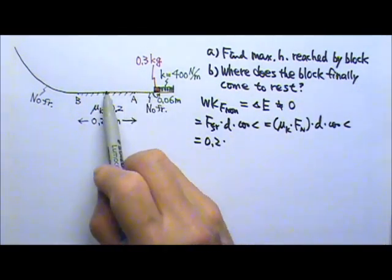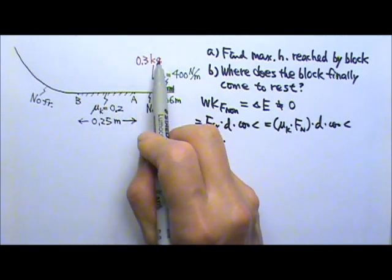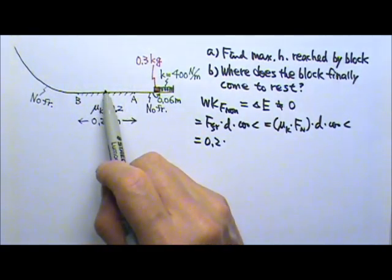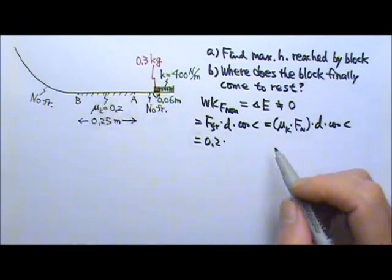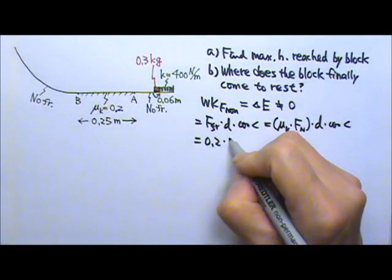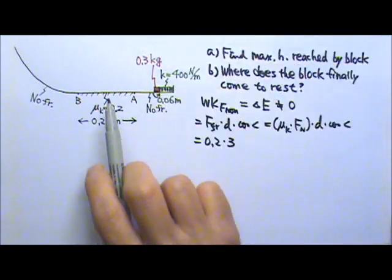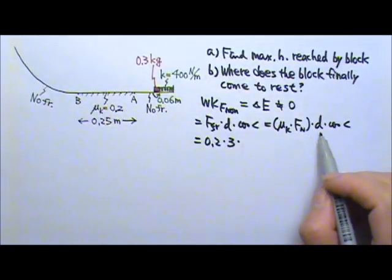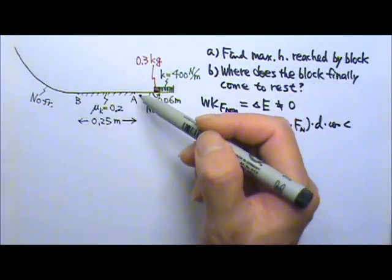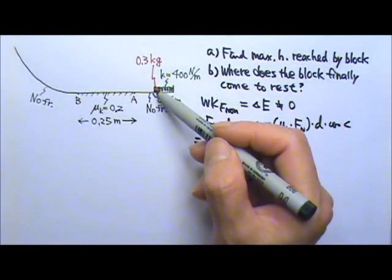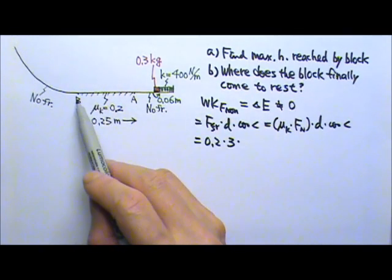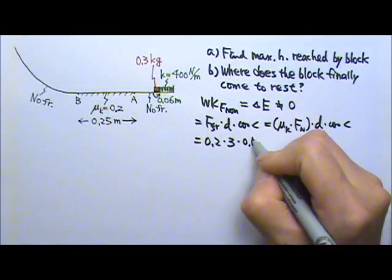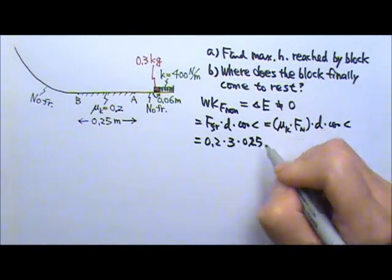the block is 0.3 kg, the normal force would equal to mg. So normal force would be 3 newtons, because normal force would balance with the mg. The displacement, to reach the maximum height on that side, the block goes through this region for 0.25 meters. So the displacement is 0.25.